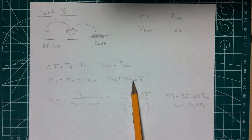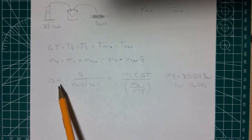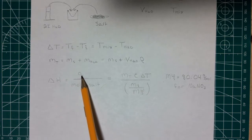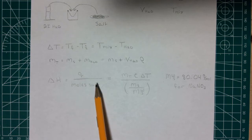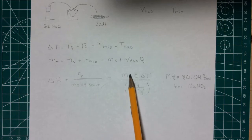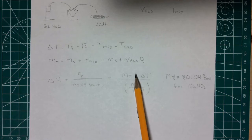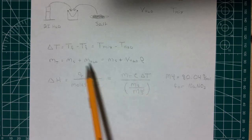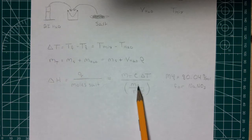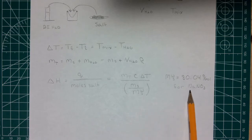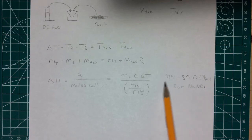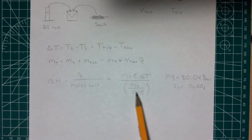Next we find the total mass: we knew the mass of the solid salt, and we add the mass of the water, which is the volume of the water times 1 gram per milliliter. It then asks for the change in enthalpy, which is Q divided by moles of salt. Q is the total mass times the specific heat capacity — 1 calorie per gram per degree Celsius — times delta T. For moles of salt, take the mass of the salt and divide by its molecular weight. They ask you to do sodium nitrate and magnesium sulfate; the molecular weight for sodium nitrate is provided.